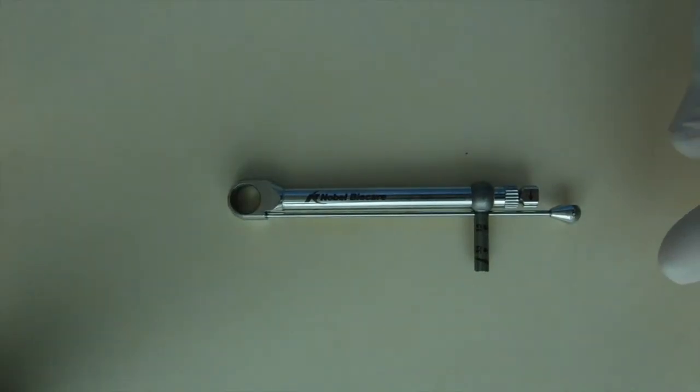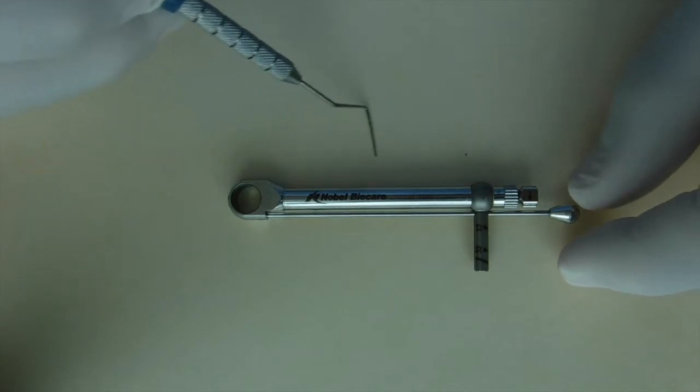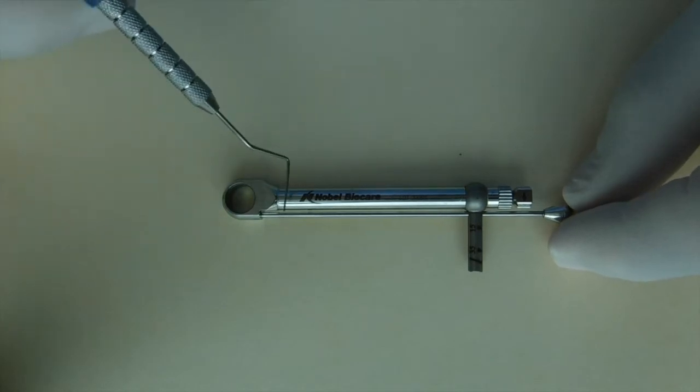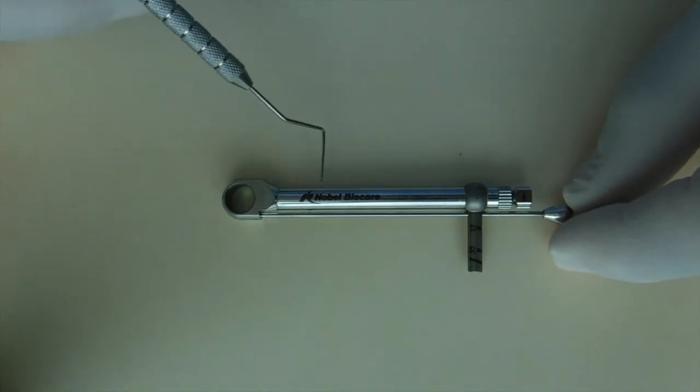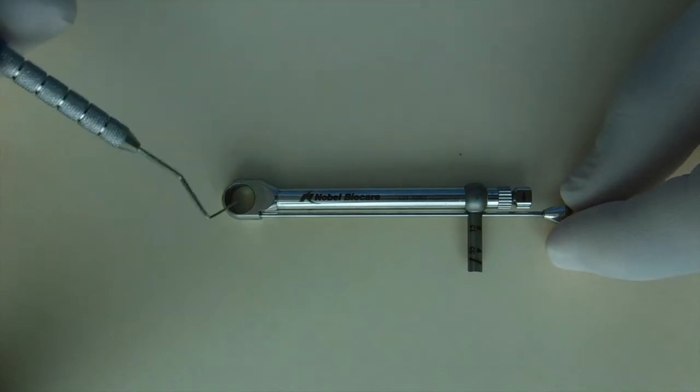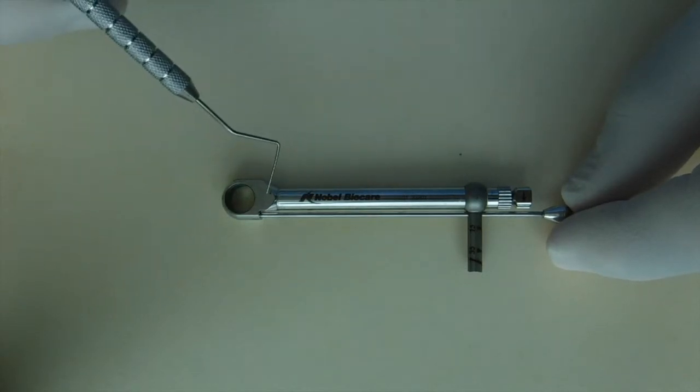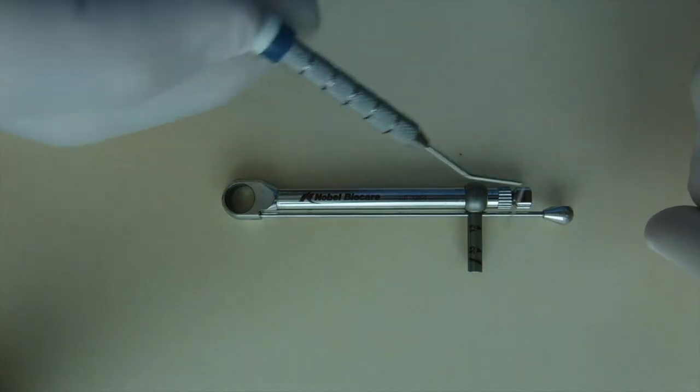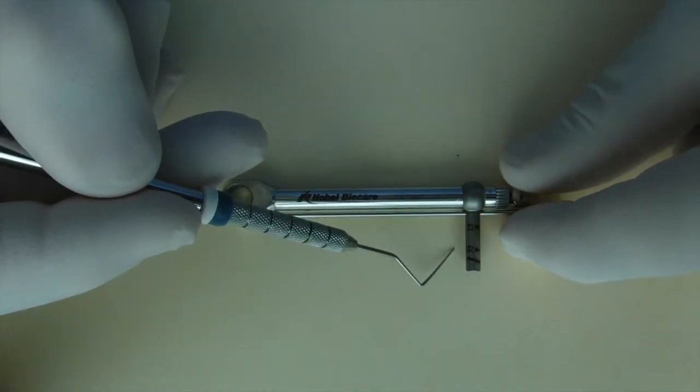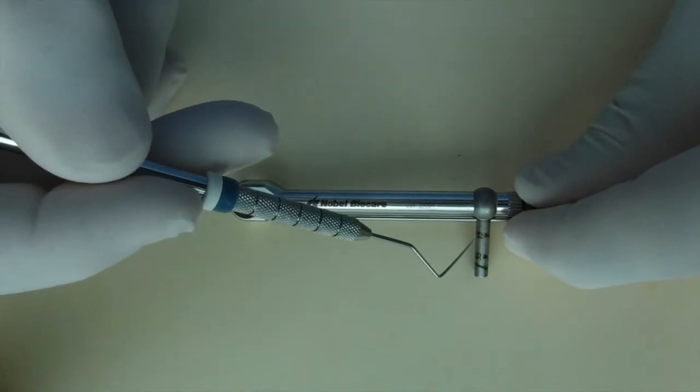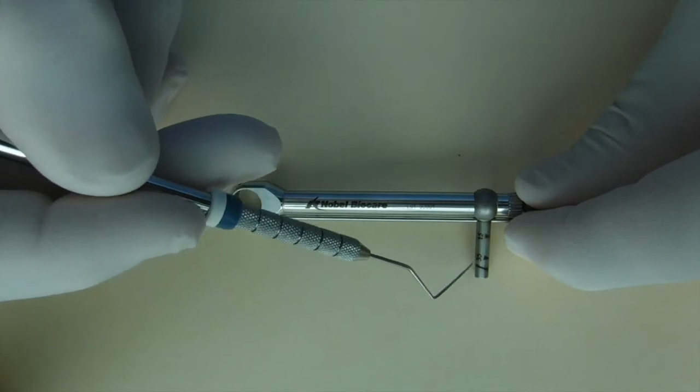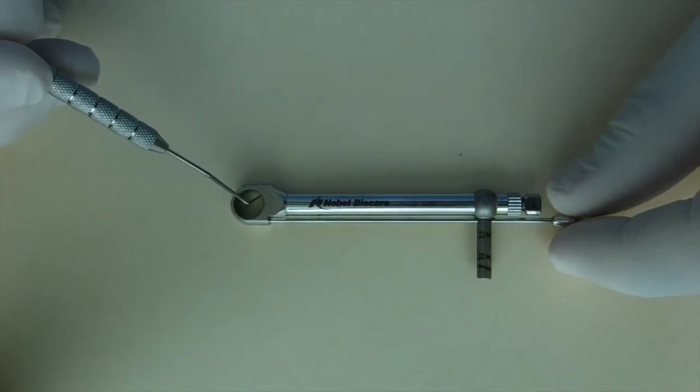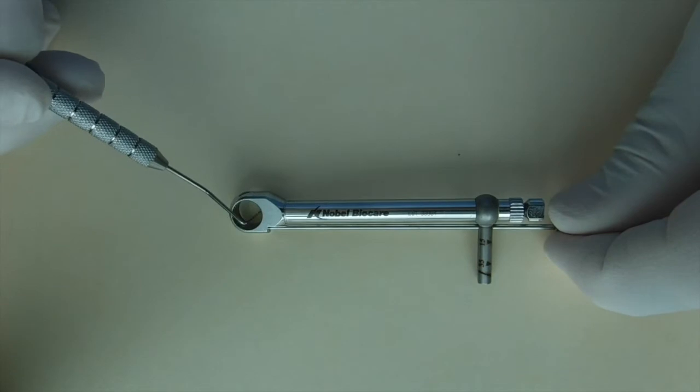The first torque wrench that we'll discuss is most commonly associated with the Nobel BioCare products. It's a double beam torque wrench which has a larger body that houses the components on the inside and a more slender lever arm with a handle. It also has an indicator bar which indicates the 15 and 35 newton centimeters of torque, as well as an opening to accept the driver.